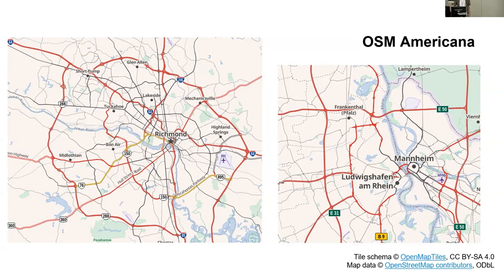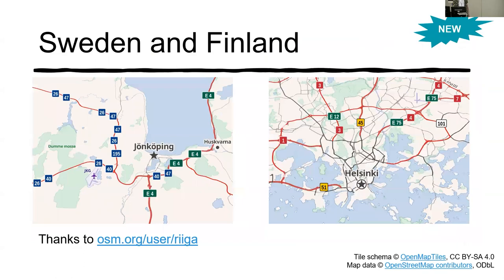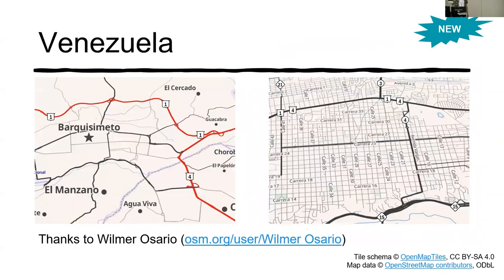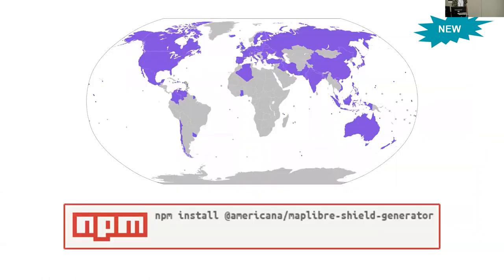Germany only has partial support — we're still missing the blue hexagons, ask me about that later. But here's where we do have shield support, thanks to the contributions of mappers around the world who coordinated with their communities and gave us a lot of helpful feedback. Canada is probably number two for most complicated. Sweden and Finland, Netherlands, Venezuela, Aotearoa New Zealand, and Australia. All the countries highlighted in purple are where we have shield support — some of it is partial. Help us fill out the map, please.